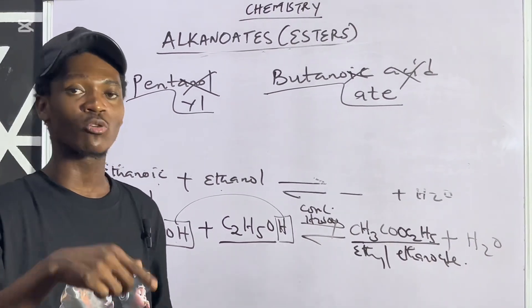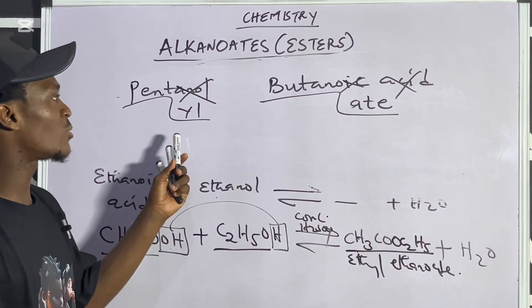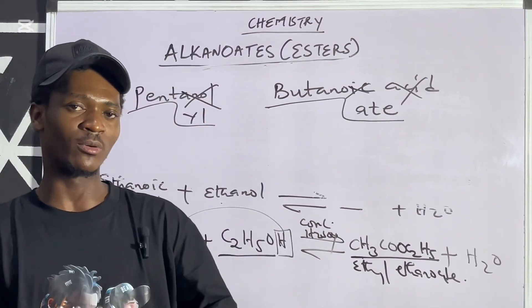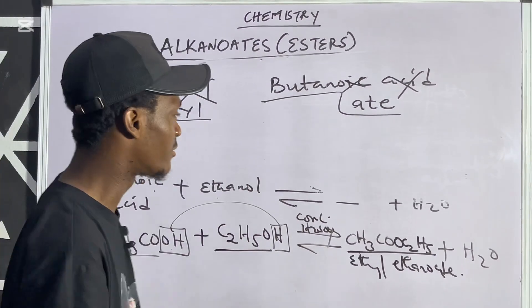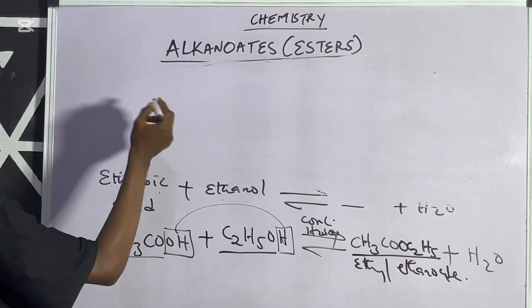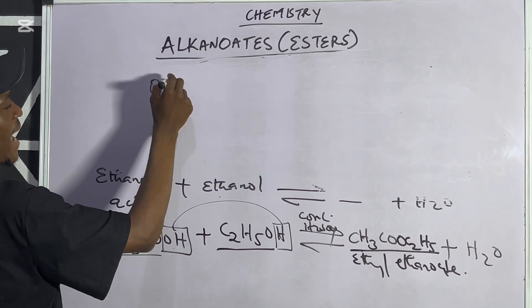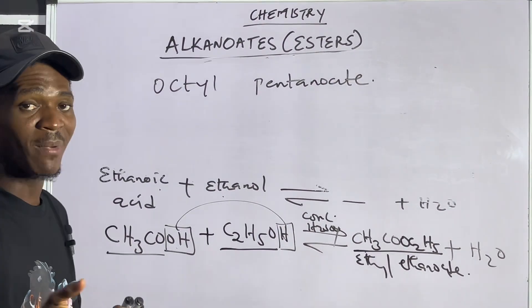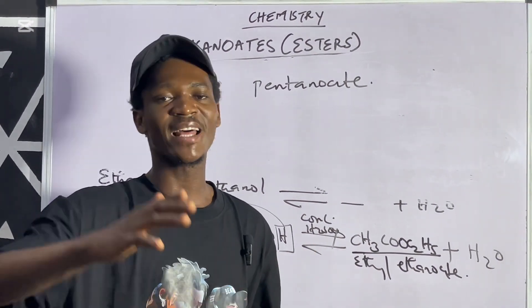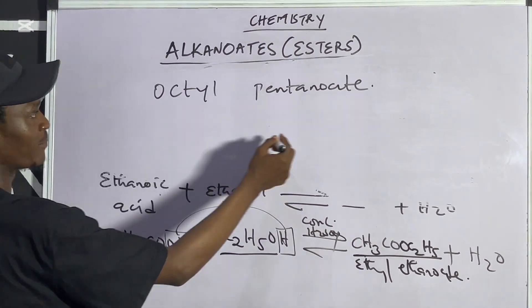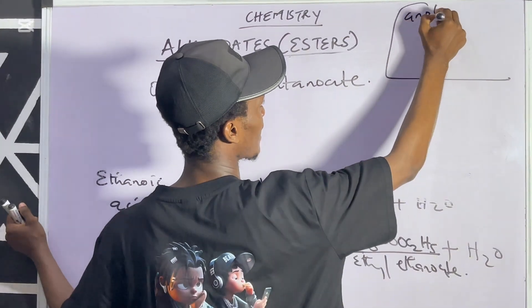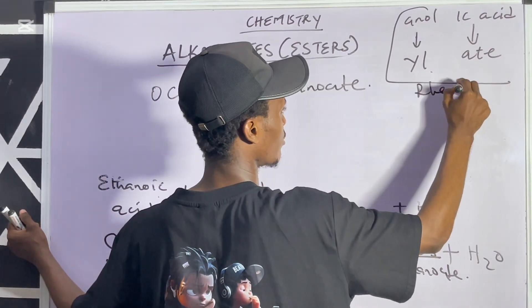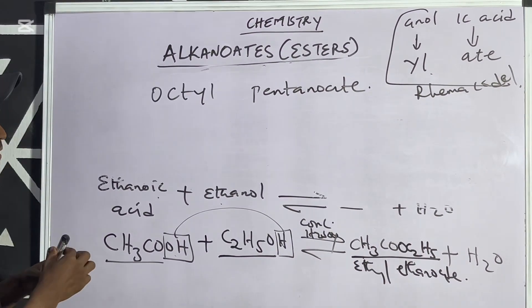Remember the backward reaction is called hydrolysis, while the forward is esterification. When you carry out hydrolysis of an ester, you obtain the alkanol and the alkanoic acid that formed it. For example, the hydrolysis of octyl pentanoate — using the Rama Code in reverse: remove '-yl' and replace with '-anol,' remove '-ate' and replace with '-ic acid.'